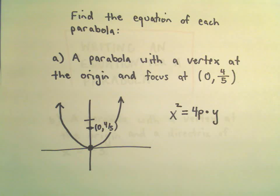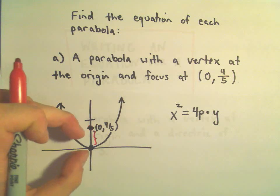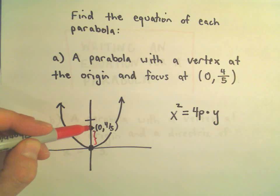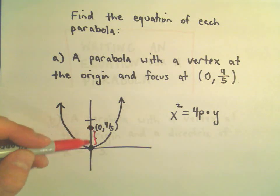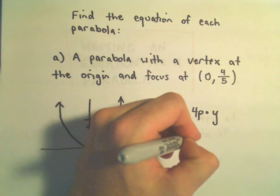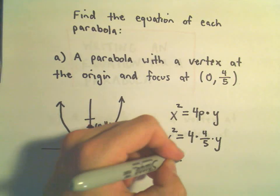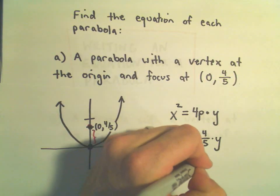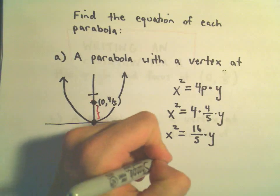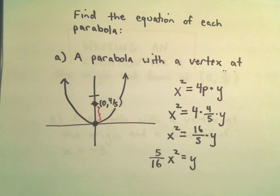And again to me all p represents, p is just the distance between my vertex to the focus. Well in this case the distance would be four-fifths, so to find the equation all I have to do is just use x squared equals four times four-fifths y. And that says x squared would equal sixteen-fifths times y, or equivalently if we multiplied both sides by five over sixteen, we would get five over sixteen x squared equals y.